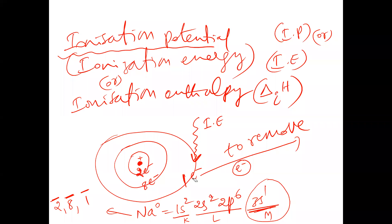If you want to remove this one electron from the sodium atom, we have to supply some amount of energy. The minimum quantity of energy required to remove the electron from the outermost orbit of a gaseous neutral atom in its ground state is called ionization energy or ionization potential.